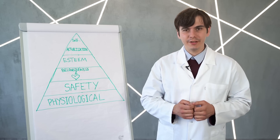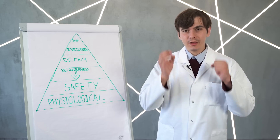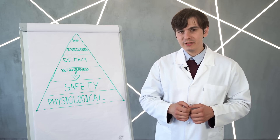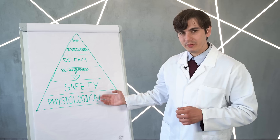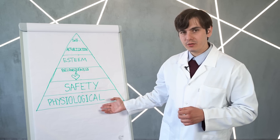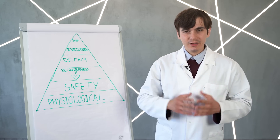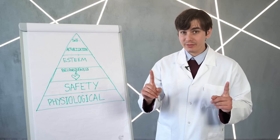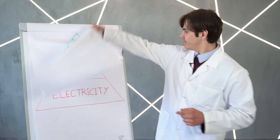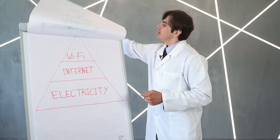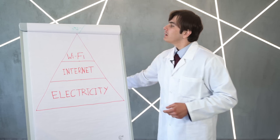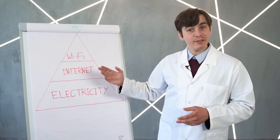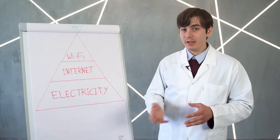Everyone in the world needs something. I need something, you need something, but to be more precise, according to Maslow's pyramid of needs, physiological and biological needs are the basics. However, others are also concerned about Wi-Fi, the internet and electricity.